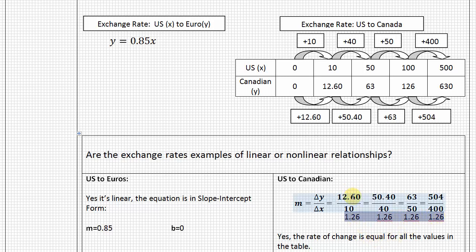12.60 divided by 10 is 1.26, 50.4 divided by 40 is 1.26, so on and so forth. So because we look at this rate of change from our table and compare that, and they are in fact all equal, then we would say yes, it is linear. The rate of change is equal for all the values in the table. We've decided that they are both linear, so let's take a deeper look at these exchange rates.